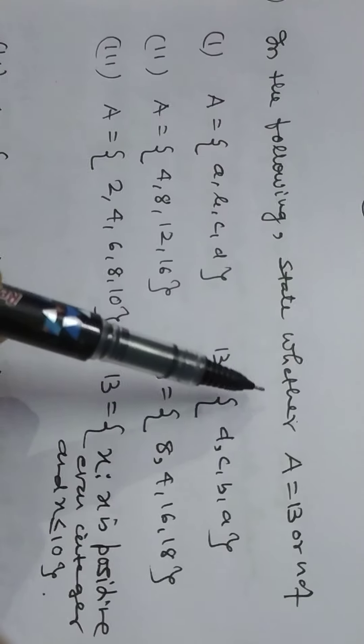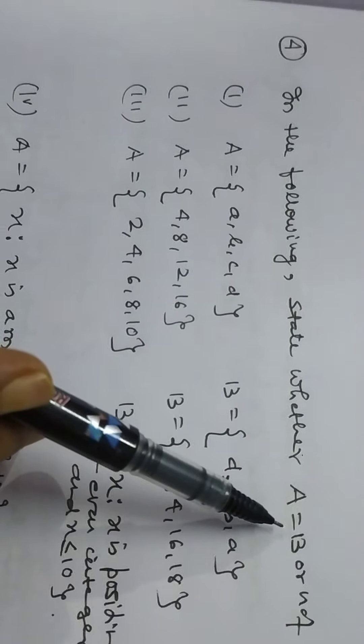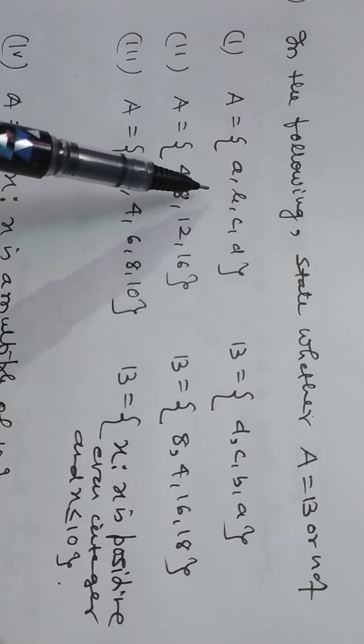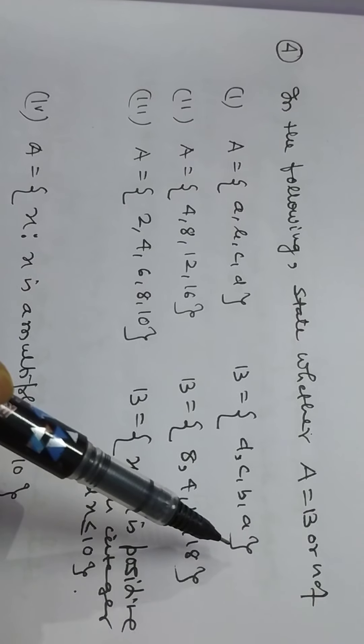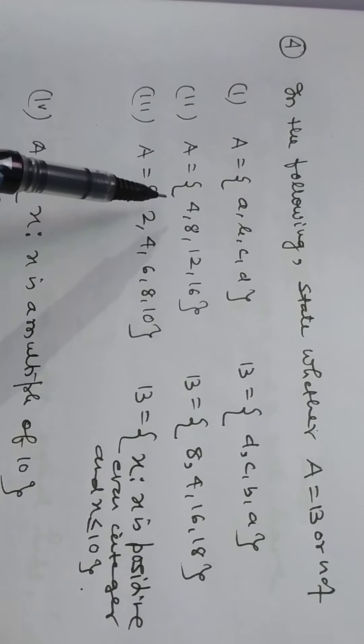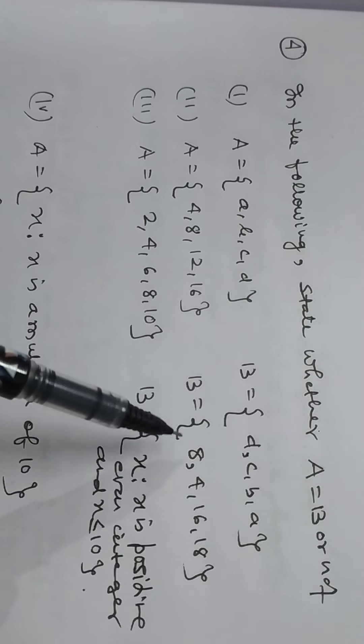In the following, state whether A is equal to B or not. A: collection of element A, B, C, D. B: collection of element D, C, B, A. Second, A is 4, 8, 12, 60. B is 4, 16, 8.